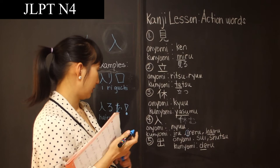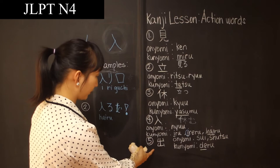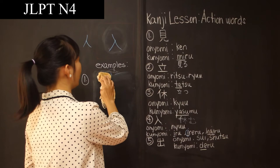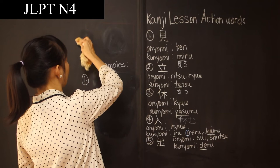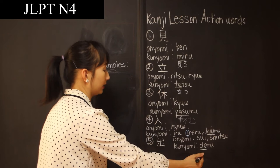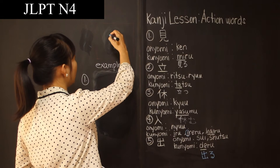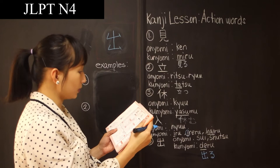The next kanji — since we have enter or entrance, next we have exit or Deru. The onyomi of this kanji are Sui and Shutsu, and its kunyomi is Deru no De. This is how we write Deru no kanji — one, two, three, four, five strokes.